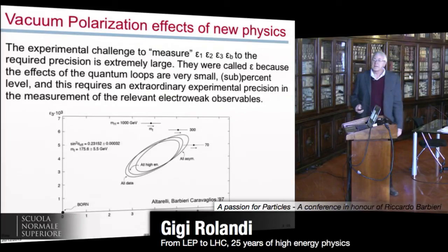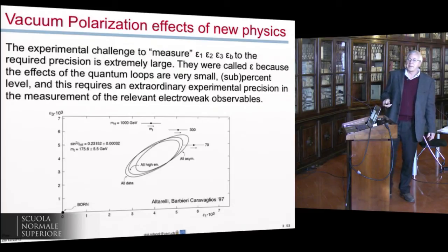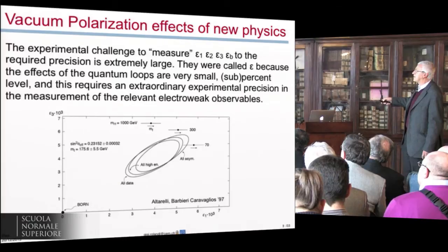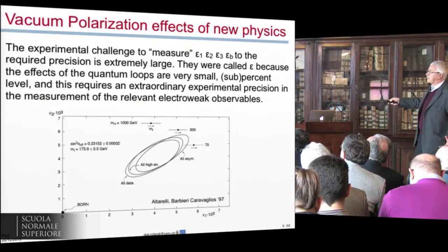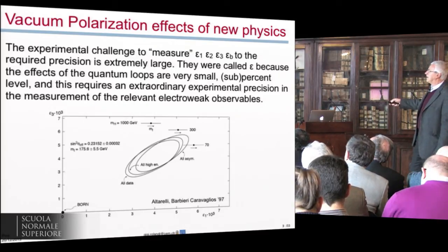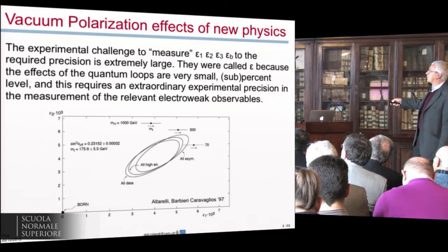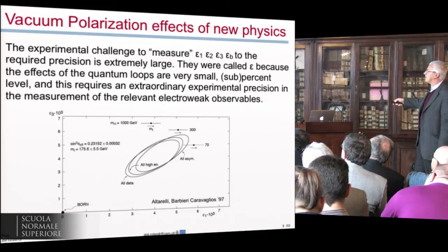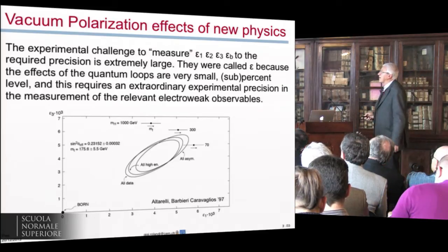You see here in this figure taken from a paper by Barbieri, Caravaglios, and Strumia. Born-level is here. And this is the constraint of electroweak precision data. And you see that we measure at many sigma the quantum effects. And here you see also the indication, the effect of the precision on the mass of the top quark and on the effect of the Higgs mass.